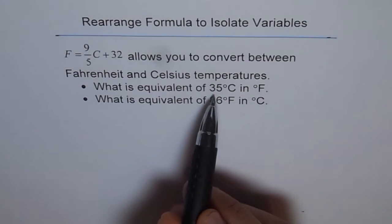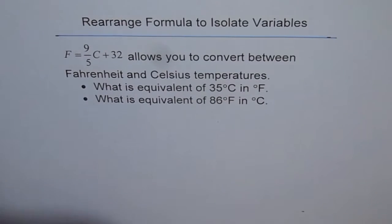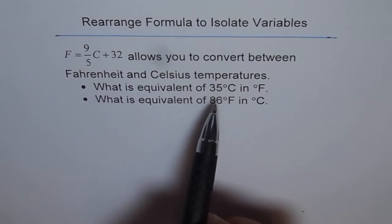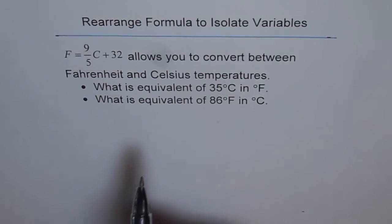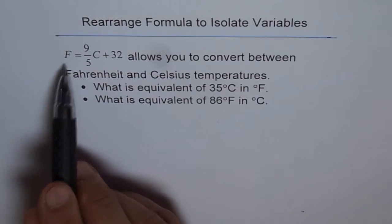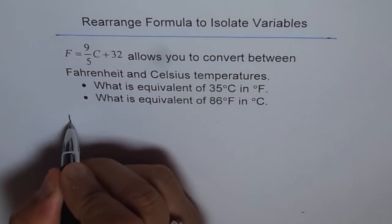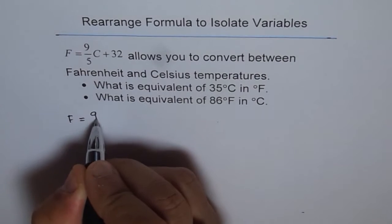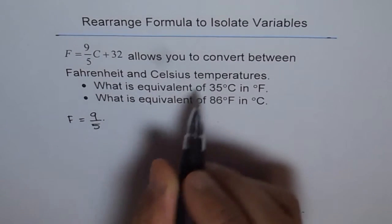So we need to just substitute 35 for C. The variable C stands for temperature in degree centigrade. And then we will find temperature in degree Fahrenheit, that variable F. So F is equal to 9 over 5 times 35,